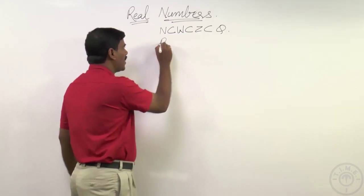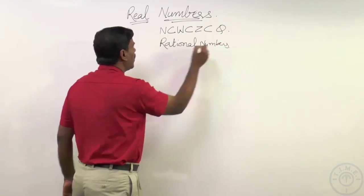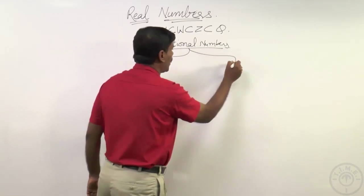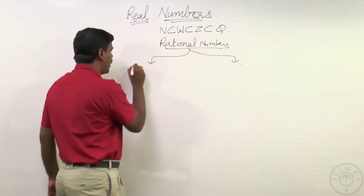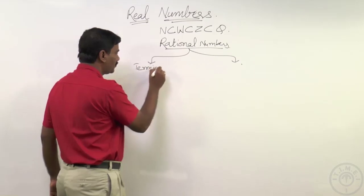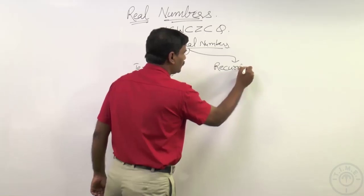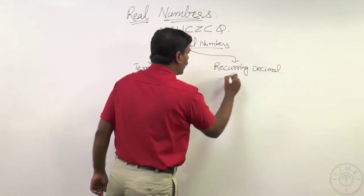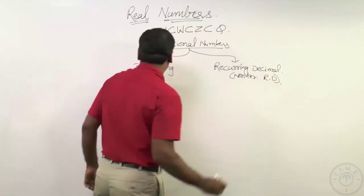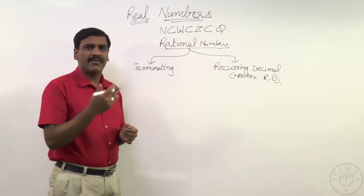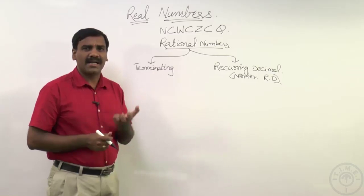Rational numbers in the form p by q with q not equal to zero can be expressed in two different decimal forms when the fraction is converted to a decimal. It may be a terminating decimal, or it may be a non-terminating, recurring (repeating) decimal. If, during the division process of a fraction, we are left with zero remainder after a finite number of steps, we consider that a terminating decimal.